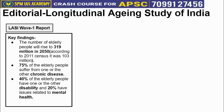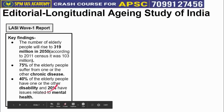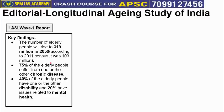75% of elderly people suffer from one or the other chronic disease. 40% of elderly people have one or the other disability, and 20% of them have mental health problems. This data makes it clear that we need special infrastructure and setups for old age care.